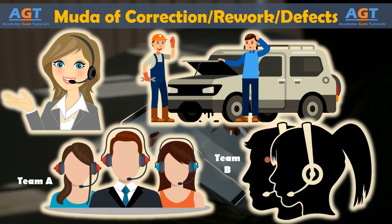Now, imagine a claim that arrives in the work queue for an employee working on Team B. The information entered into the computer is incomplete, so the employee cannot determine for sure if the claim is related to a multi-car accident. The employee might send the claim back to the original queue, which means a call center employee would have to call the insured back to gather additional information. The claim would then be routed again, according to the new information, and would wait in a work queue again.